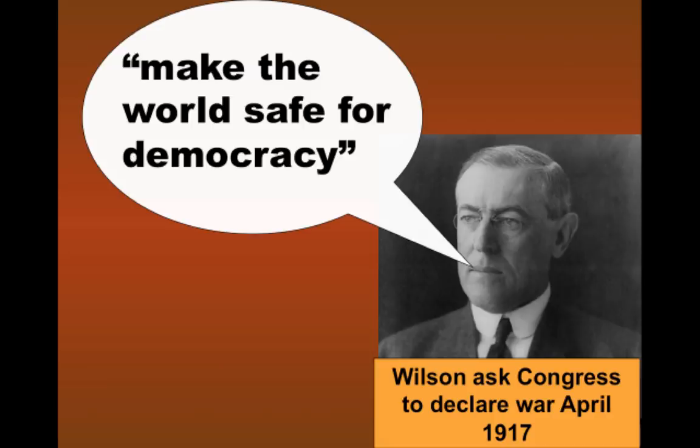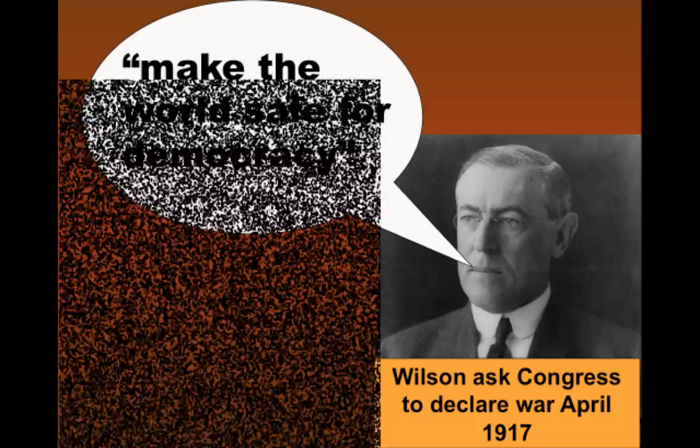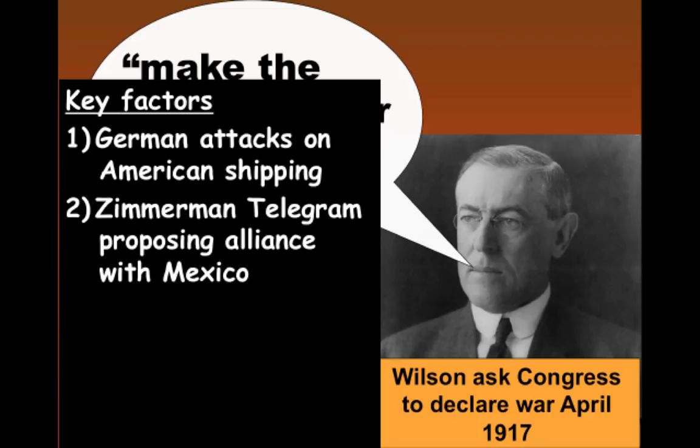When Wilson asks Congress to declare war, he says one of the things he was hoping for was to make the world safe for democracy. Wilson really believed that this would be the war to end all wars. Make sure you know the key factors for our involvement in World War 1: one, German attacks on American shipping; two, the Zimmermann telegram proposing an alliance with Mexico; but don't forget that Wilson also had a desire to be involved in the post-war settlement.